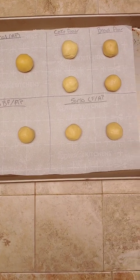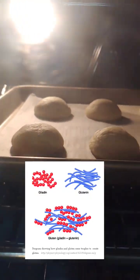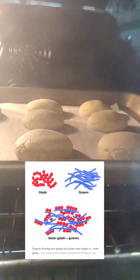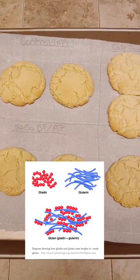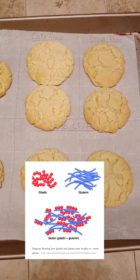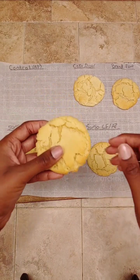Flour proteins, mainly glutidin and glygatedin, are responsible for the development of gluten. Gluten is formed during the interaction of glutidin and glygatedin in the presence of a liquid, usually water, and helps to maintain the structure of baked goods.